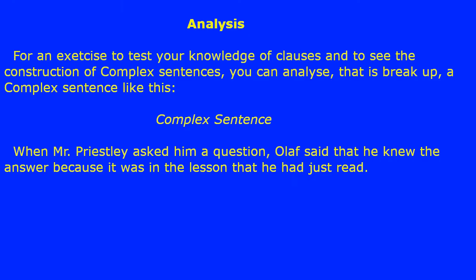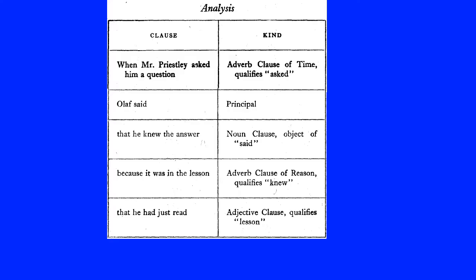For an exercise to test your knowledge of clauses and to see the construction of complex sentences, you can analyze — that is, break up — a complex sentence. Complex sentence: when Mr. Priestly asked him a question, Olaf said that he knew the answer because it was in the lesson that he had just read. Analysis: 'when Mr. Priestly asked him a question' — adverb clause of time, qualifies 'asked'; 'olaf said' — principal clause; 'that he knew the answer' — noun clause, object of 'said'; 'because it was in the lesson' — adverb clause of reason, qualifies 'knew'; 'that he had just read' — adjective clause, qualifies 'lesson'.